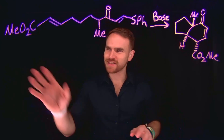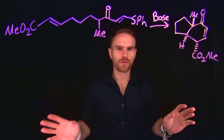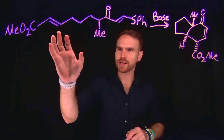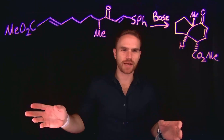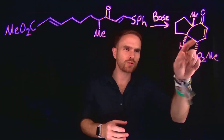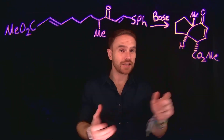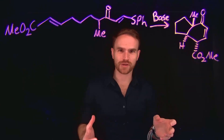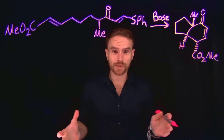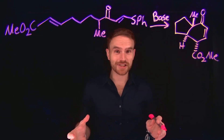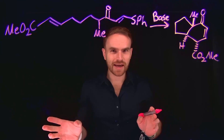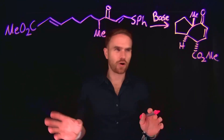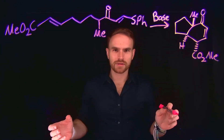Upon inspection, this reaction looks incredibly complicated. We see that we have a very long linear chain of carbon atoms, which ultimately turns into two different rings, each containing stereochemical control at several different positions. But ultimately, this is actually just a two-step reaction, and we can break it down by trying to identify the different carbon atoms which make up the different rings.